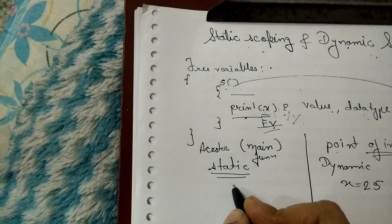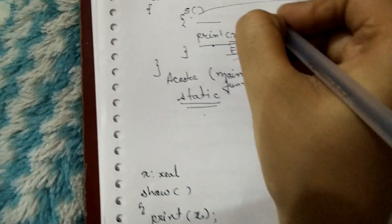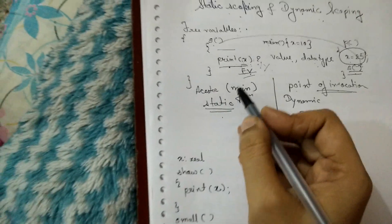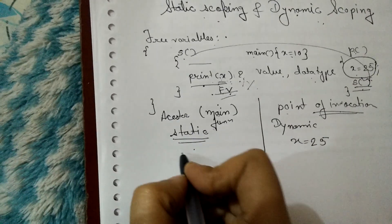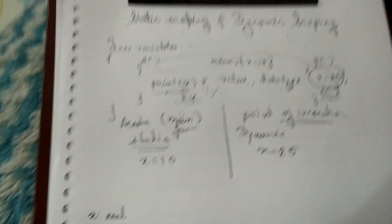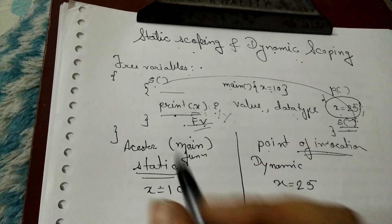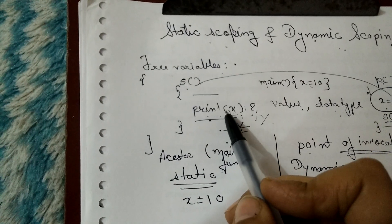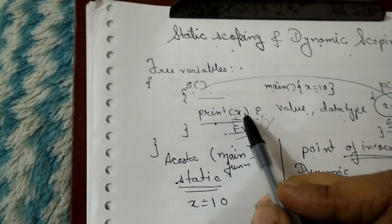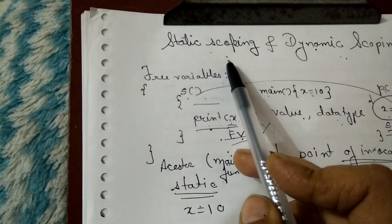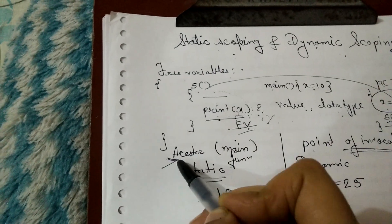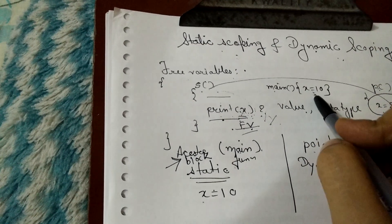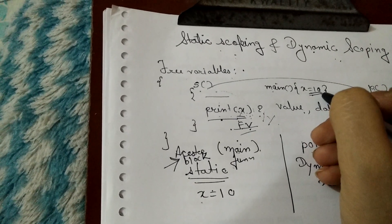In static scoping we refer to the main block. Consider a main function where the value of X is 10. The free variable X refers to the value in main, so its value becomes 10. That is the basic difference between static scoping and dynamic scoping. To revise: a free variable is a variable not declared in the scope. We solve this using either dynamic scoping or static scoping. In static scoping we follow the ancestor block, which is the main function — so the value of X is 10.